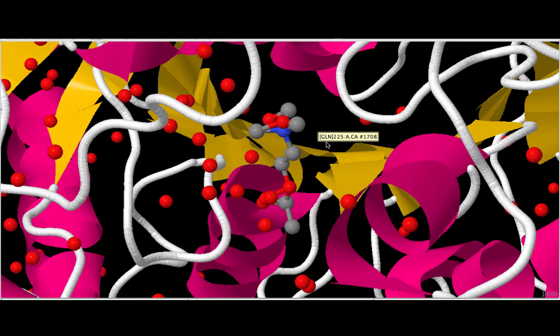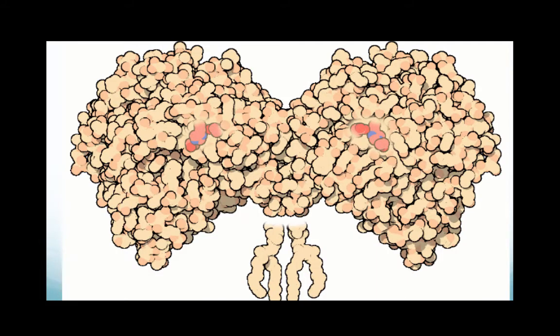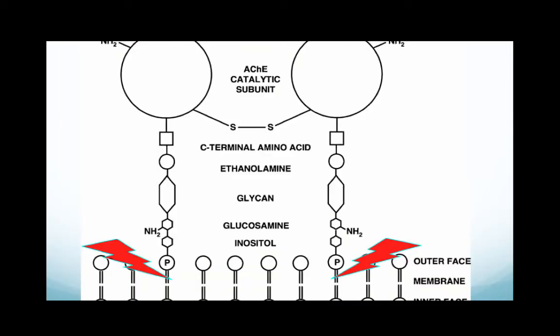In the body, acetylcholinesterase exists mainly as a GPI-anchored monomer, dimer, or tetramer to nerve and muscle cells. Seen here is the dimer of acetylcholinesterase, a simplified version to show how it is anchored to the lipid membrane of nerve or muscle cells. Each dimer is connected by disulfide bridges between the catalytic subunits.